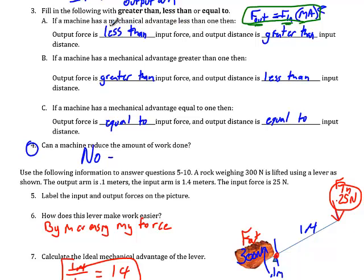Now this says if a machine has a mechanical advantage less than one, so this number right here, the mechanical advantage is less than one. Well if that's the case, that means my output force is going to be less than my input force. Whatever force I put in, the machine takes and makes smaller. Of course since the work done has to remain the same, that means I'm going to get out more distance. So when you have a mechanical advantage less than one, you put in a big force over a short distance and you get out a small force over a much larger distance.